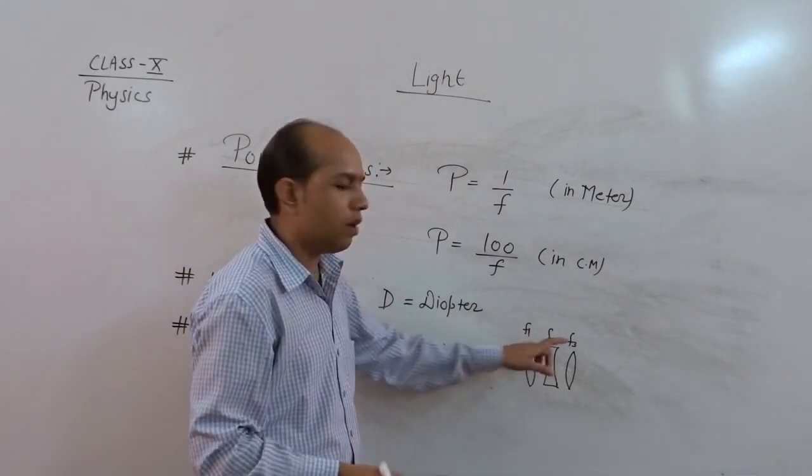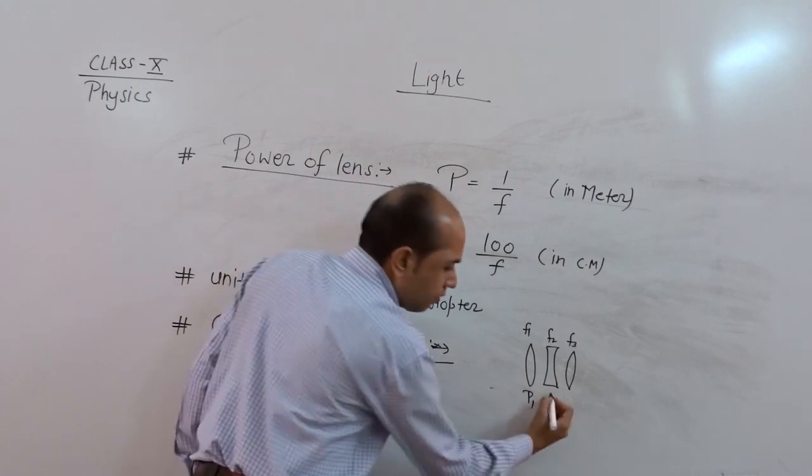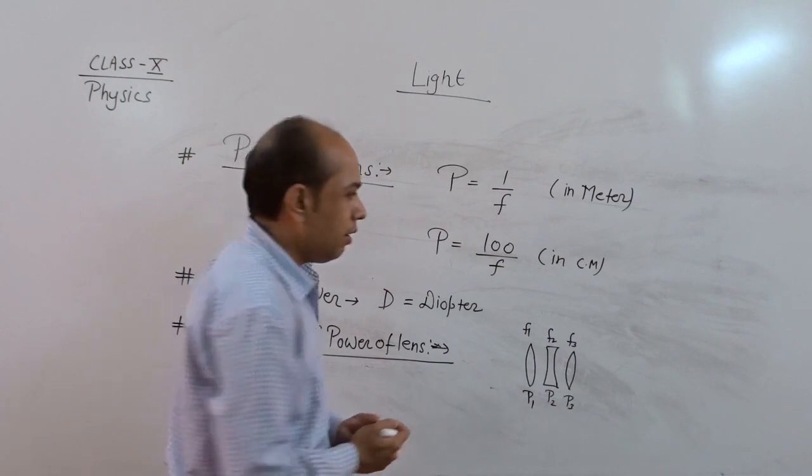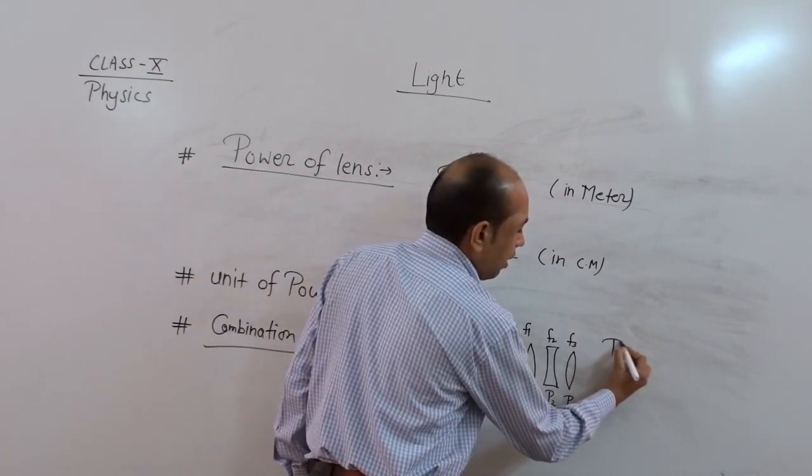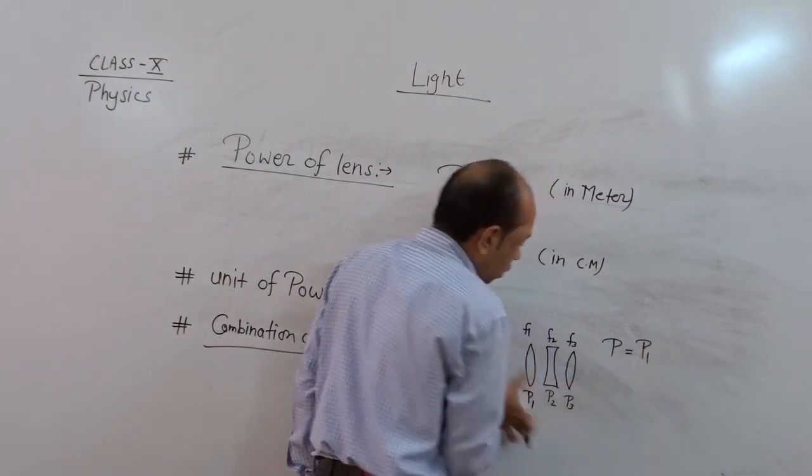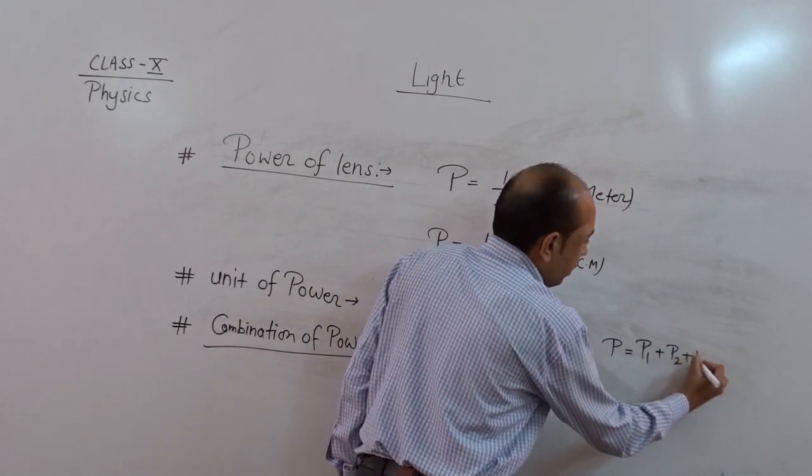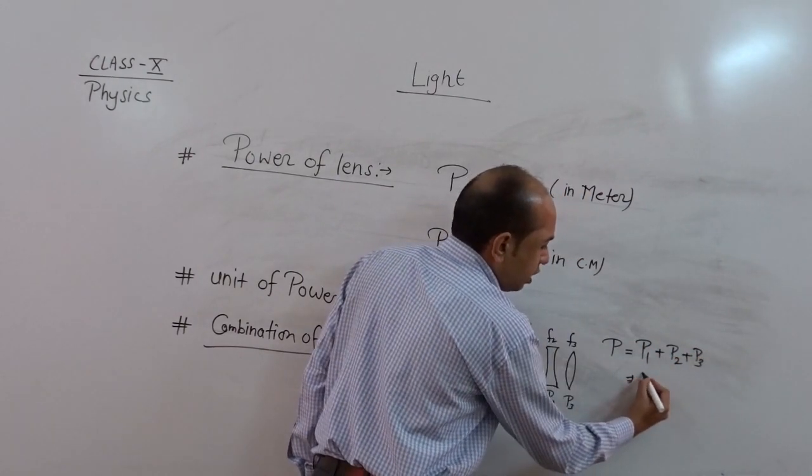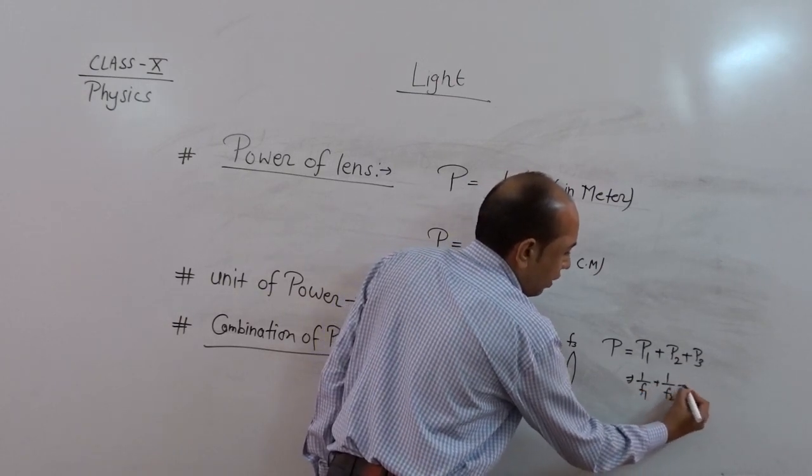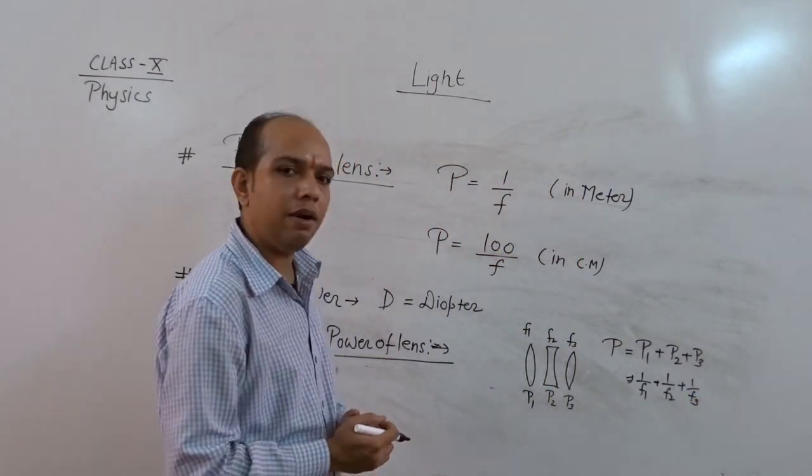So obviously different focal length that means each lens have different power p1, suppose p2 and p3. So resultant is to be given by again p that is power. And this is sum of individual power of each lens. So p1, p2 and p3. And p1 means 1 upon f1, 1 upon f2 and 1 upon f3. So this denotes here resultant power.